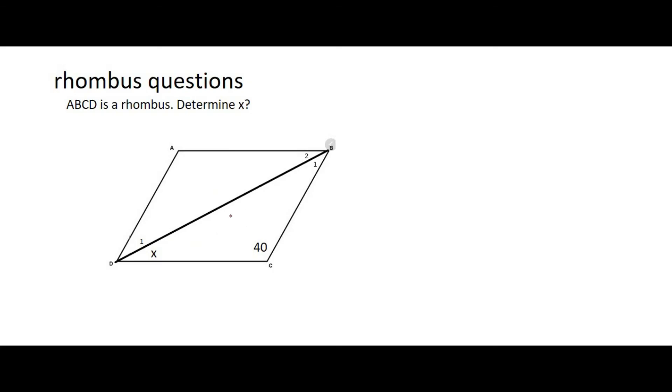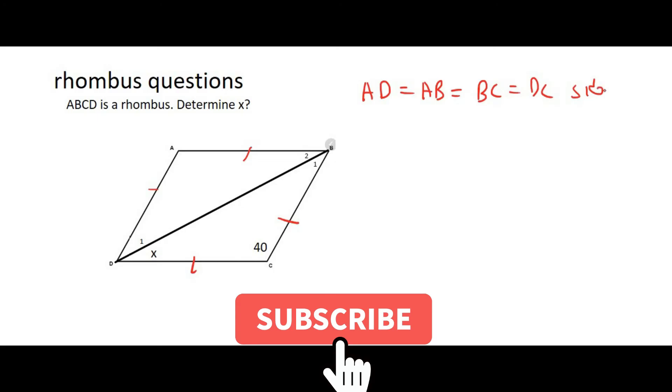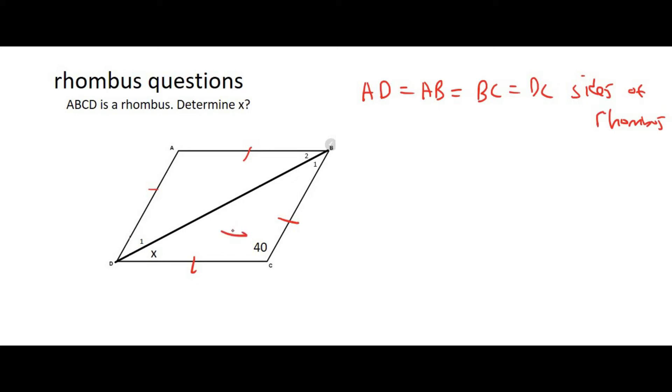All right, well one way that we can do this is we could see that all the four sides are going to be the same, right? So we can say that AD is going to be equal to AB, which is going to be equal to BC, which is going to be equal to DC. Why? Because these are the sides of rhombus. That's my reason. Sides of rhombus. We know that they are all the same. Now why is this useful?